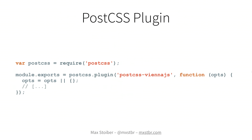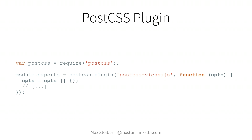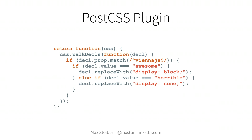This is just some boilerplate code. We require PostCSS to be able to use it, then we export the PostCSS plugin function, which takes a name and a callback function. You can have options — OPTS that gets passed in — so you can change things in your plugin based on what the developer actually wants to do. This is the actual plugin — everything needed to replace Vienna JS awesome with display block and Vienna JS horrible with display none.